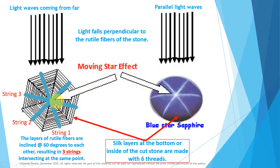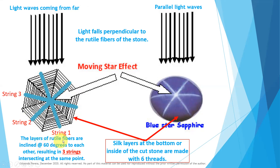Now look carefully. String 1 is created with this parallel line. Can you see this regular parallel line? Both sides — this side and this side. It is one line, one layer. Then another layer is here — string 2. String 1 and string 2: what is the angle? 120 degrees. The angle between this layer and this layer is 60 degrees. Then when it turns another 60 degrees, this layer comes. So here there are 3 rutile layers. The layers of rutile fibers are inclined at 60 degrees to each other.